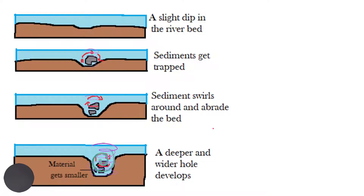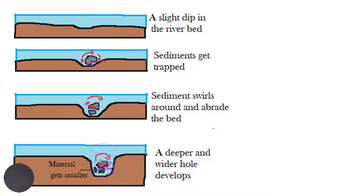Whatever the cause, because of that little depression in the bed, sediments often get trapped in that area. As the river continues to flow — and the water tends to be very turbulent in the upper course — it will cause the trapped sediment to start to swirl around. As it swirls around, abrasion will take place, which is a type of erosion, and so a hole is carved out in the river bed. With time, this hole is going to get deeper and wider.